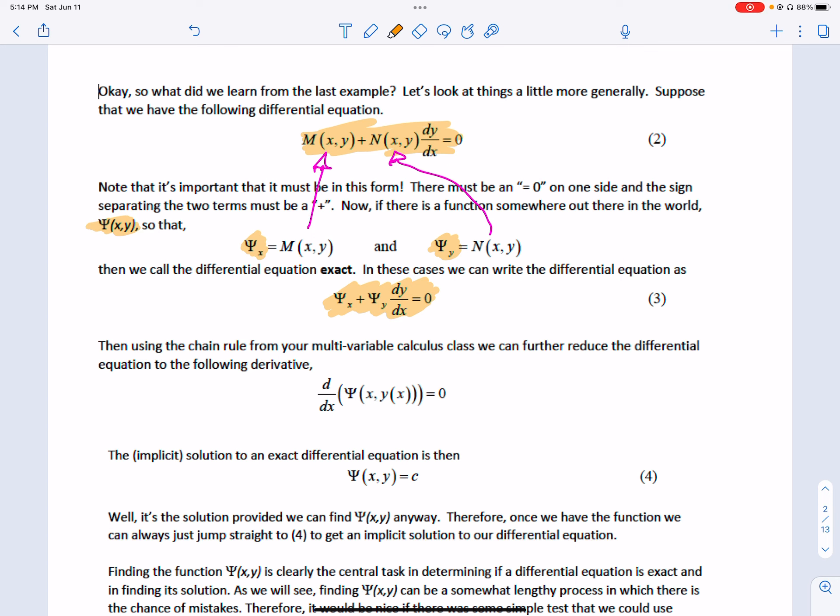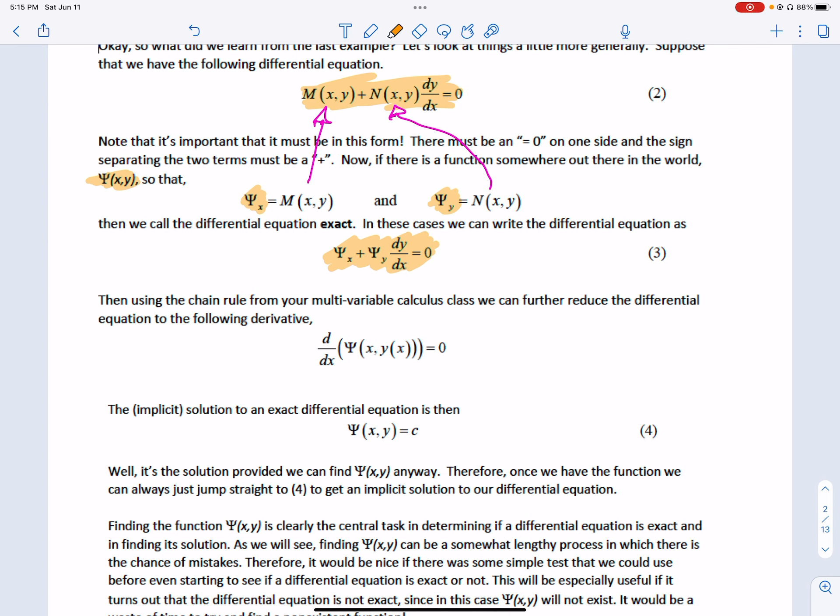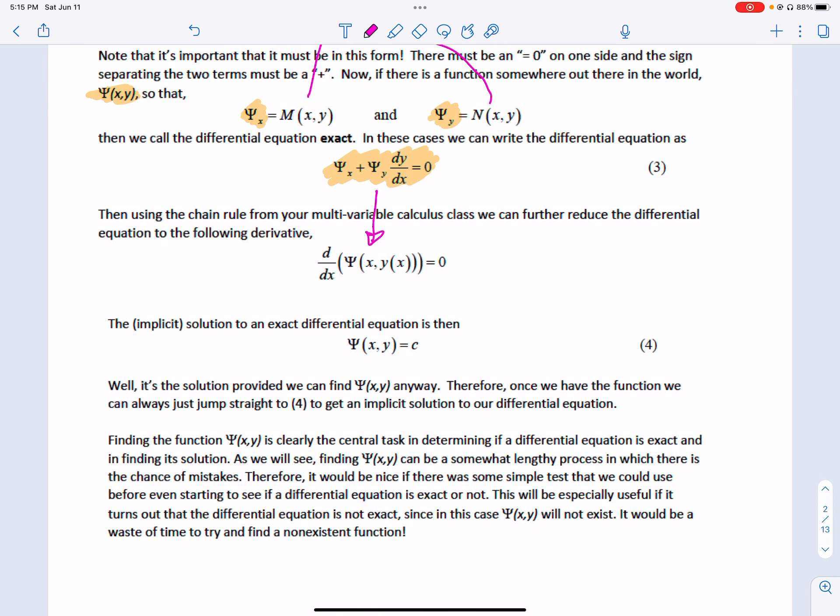Now, we knew from that last video that there is some function that I can take the partial derivatives and get each function. If it's exact equation, there is this function, that when I take the partial for x, I get M, and when I take that same function with the partial y, I get N. Why this works out is if that's the case, I can rewrite the equation to this form.